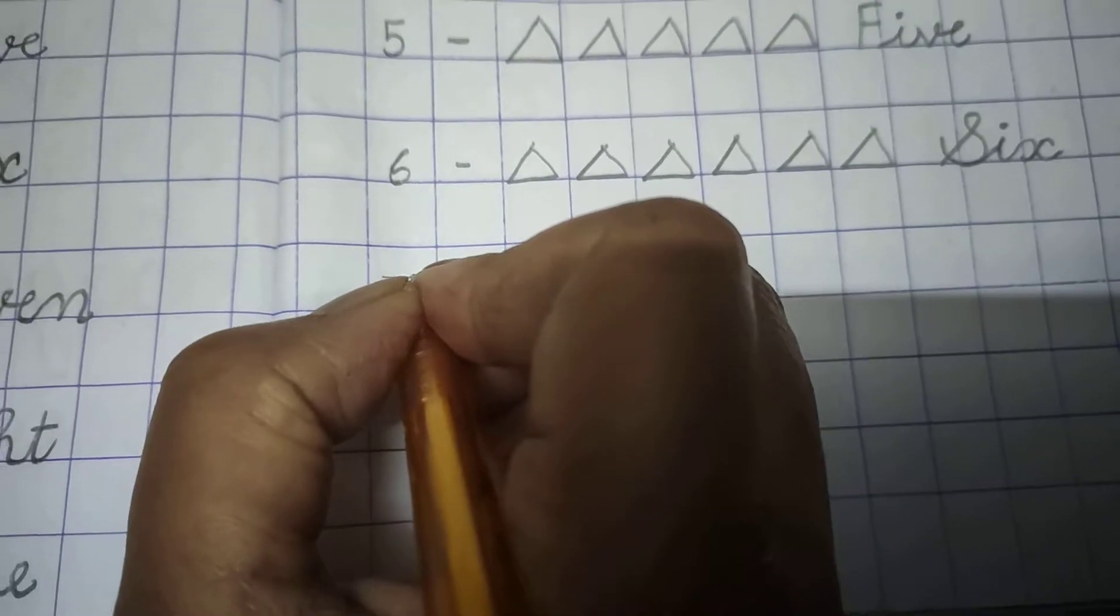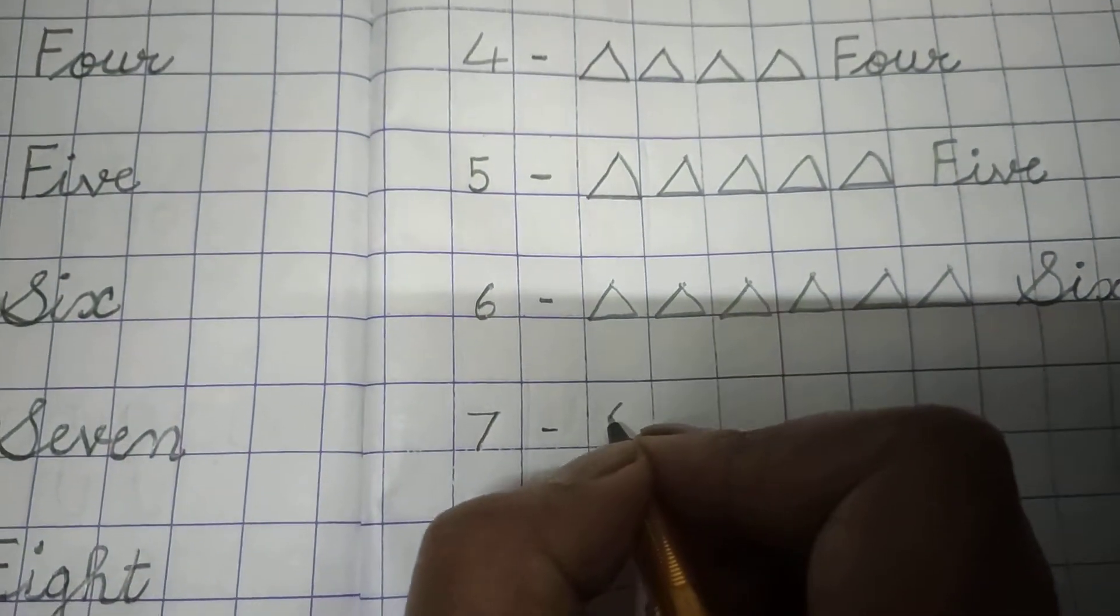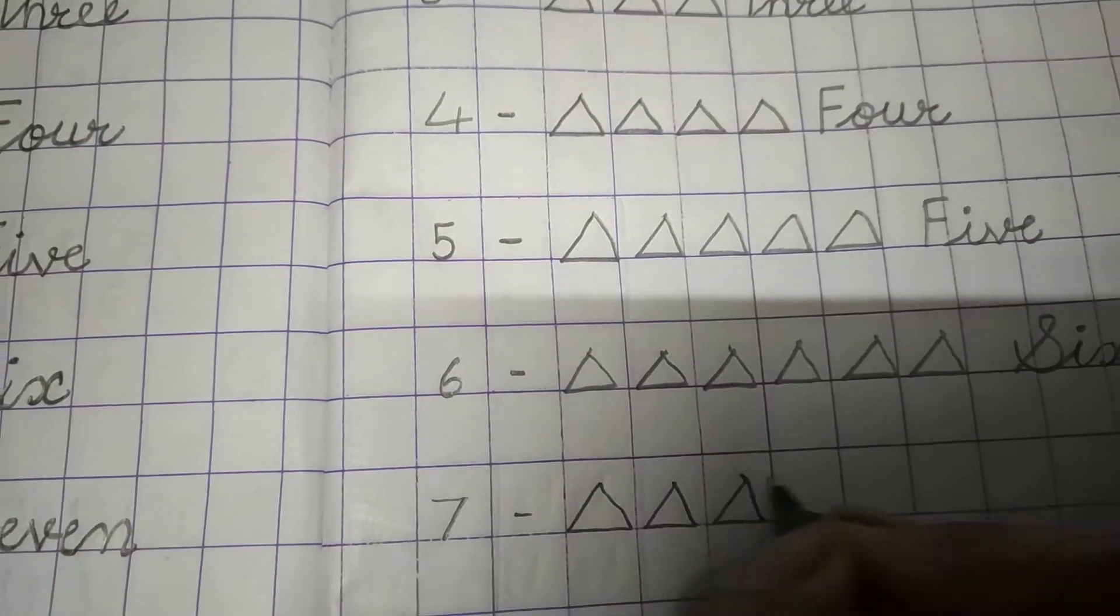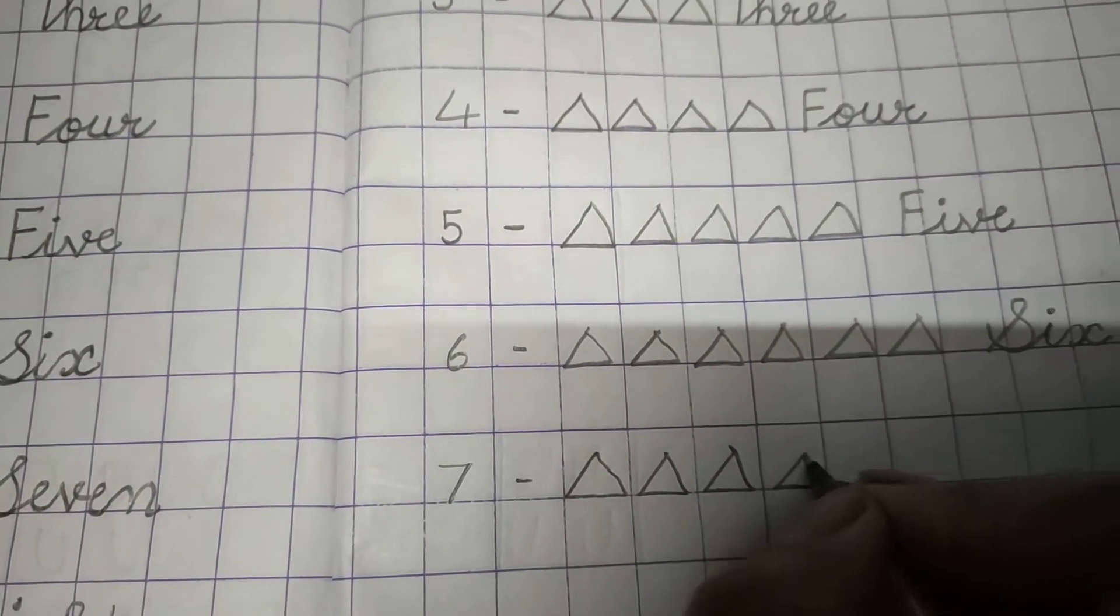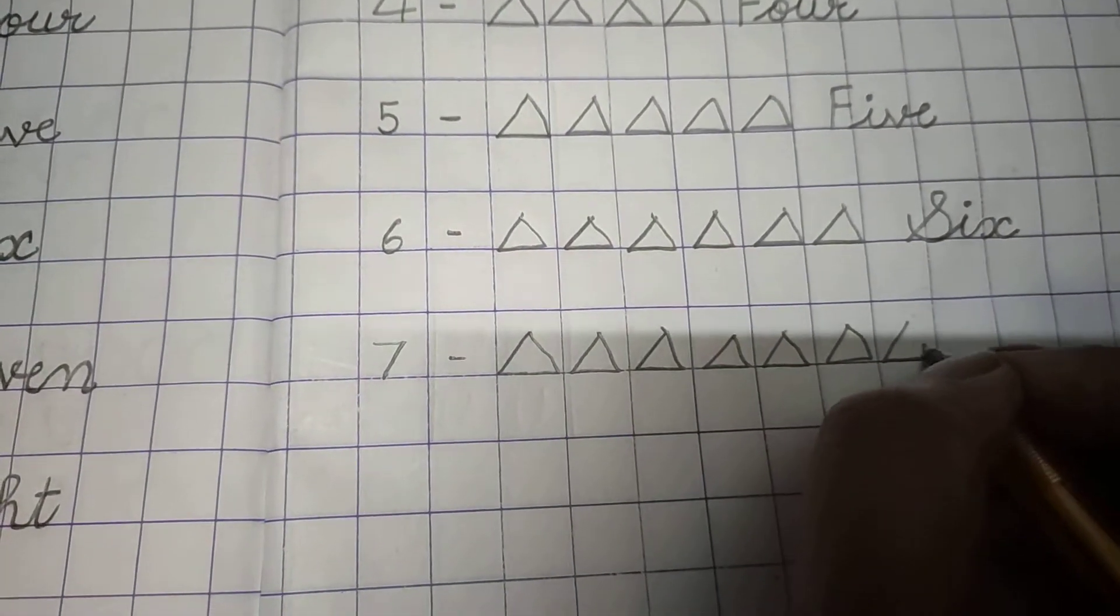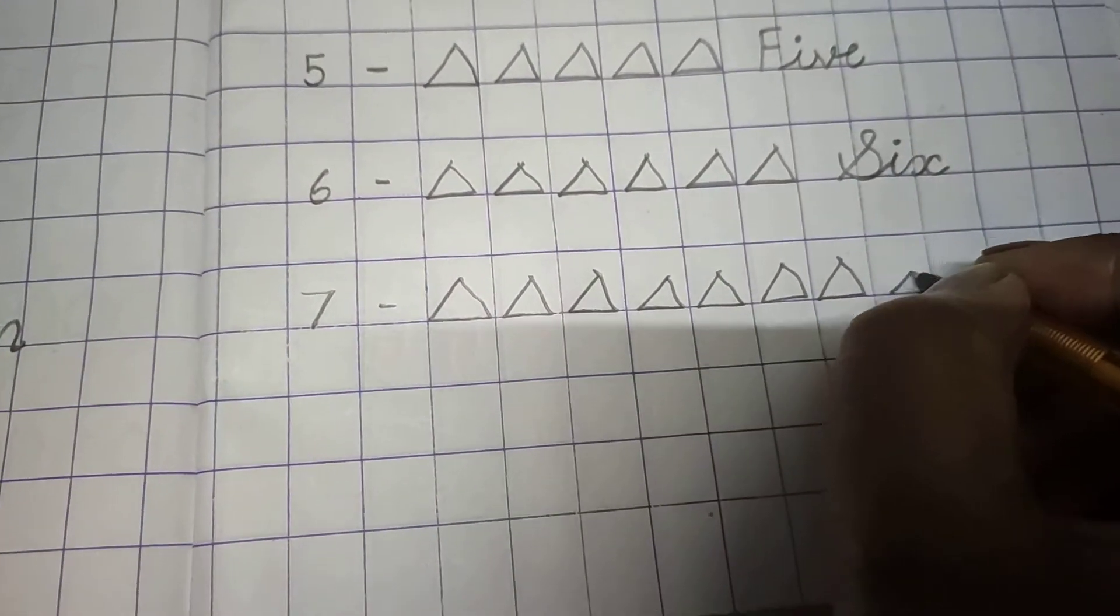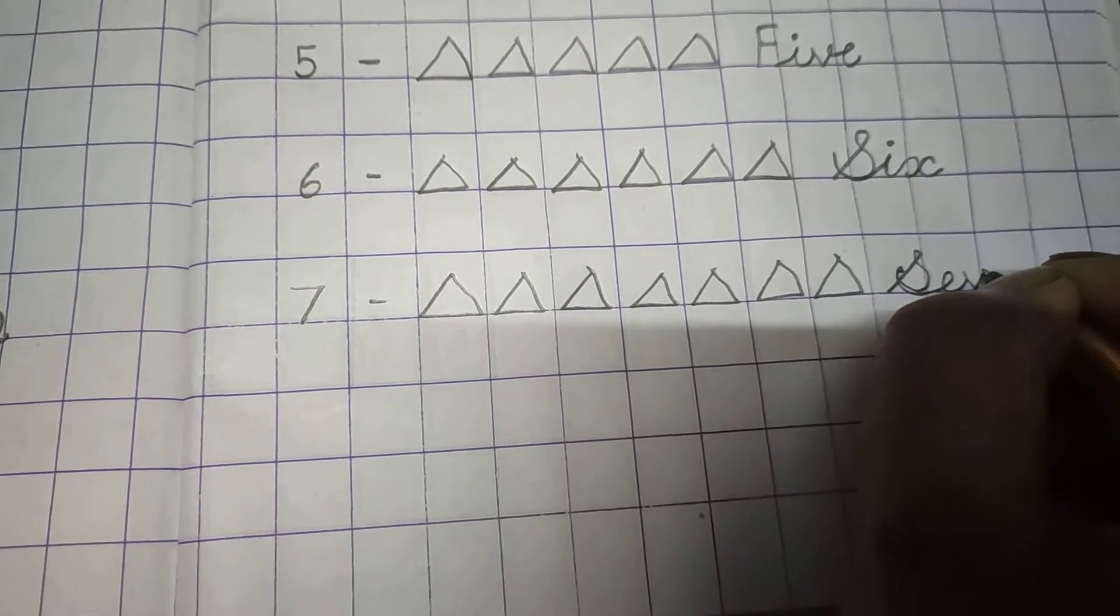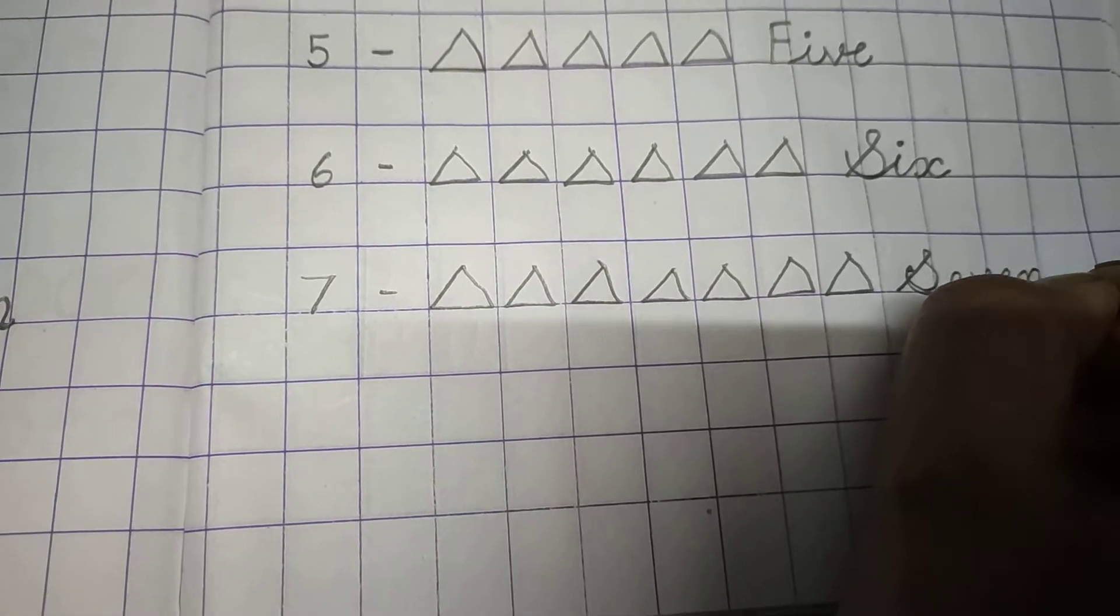7. 7 triangles. Count: 1, 2, 3, 4, 5, 6, 7. Now write down 7: S-E-V-E-N, 7.